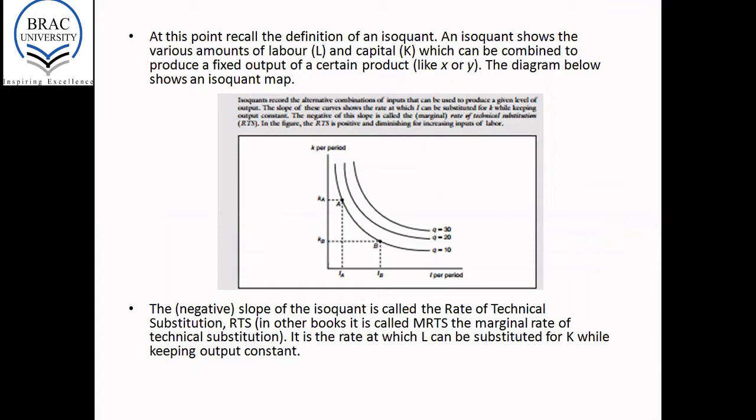Now at this point, recall the definition of an isoquant. You should remember this from ECO 206. An isoquant shows the various amounts of labor and capital which can be combined to produce a fixed amount of a certain product like X or Y. The diagram below shows an isoquant map.